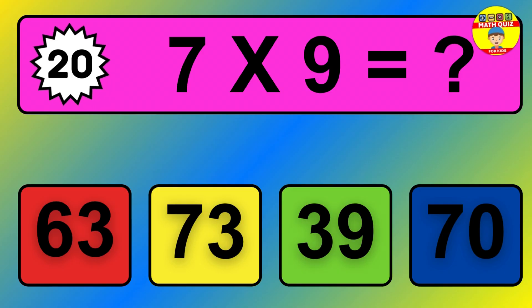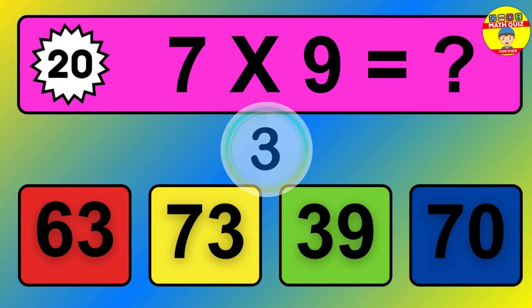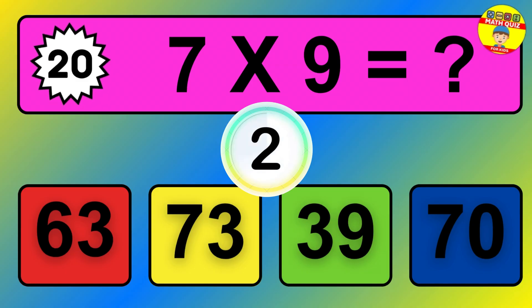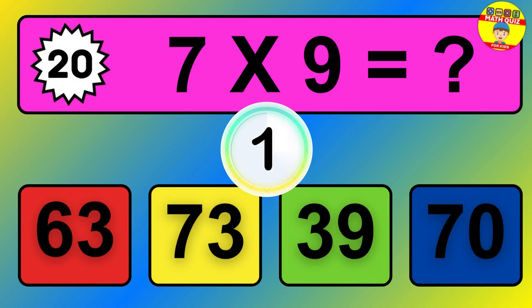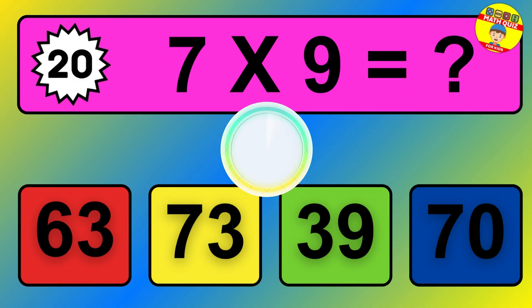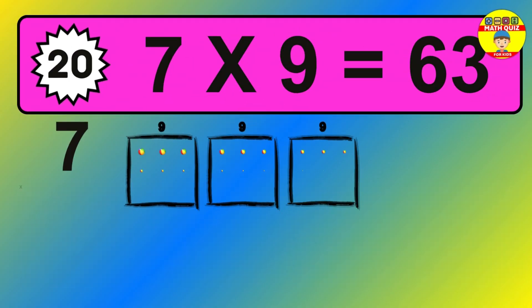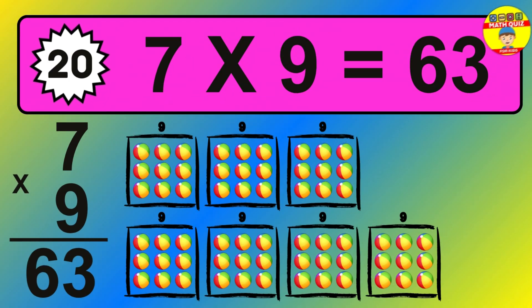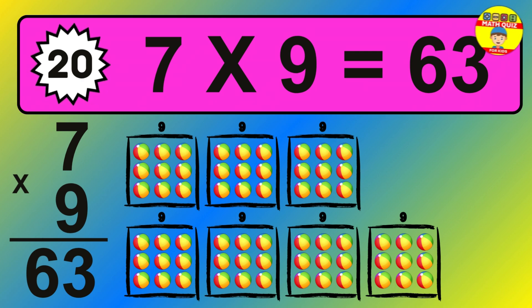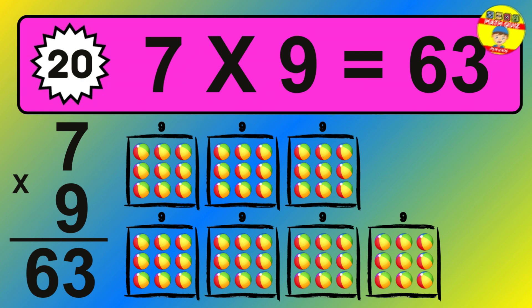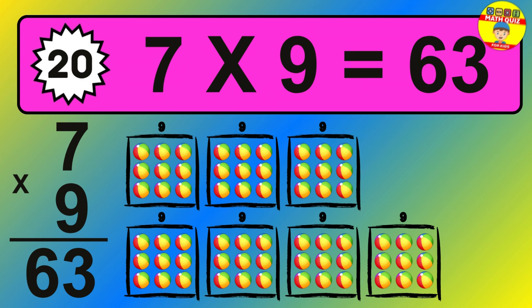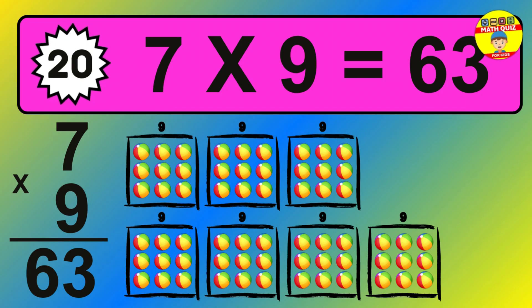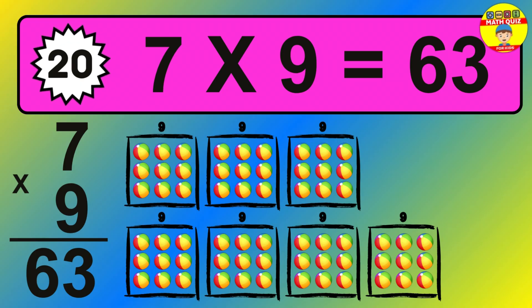Question 20. 7 times 9 equals what? The answer is 7 times 9 is 63. To calculate, we have 7 groups with 9 balls each one. So how many balls do we have? 63 balls.